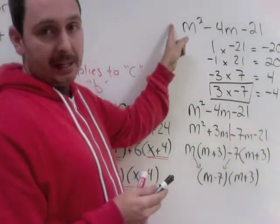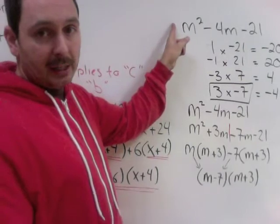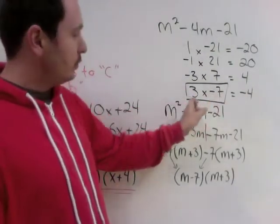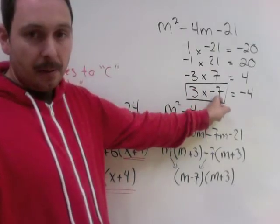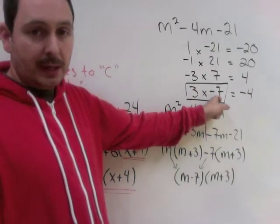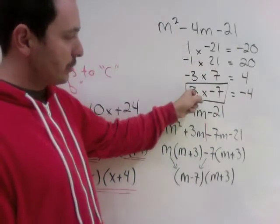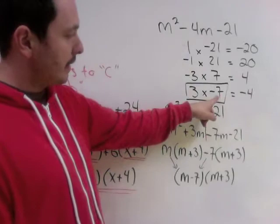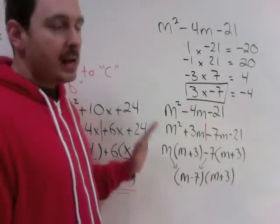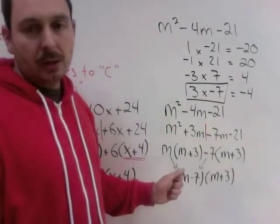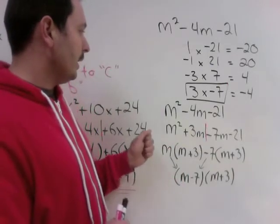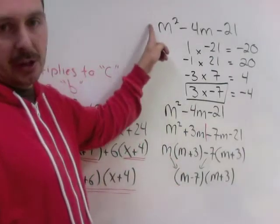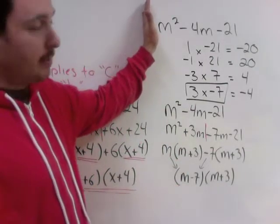Whenever there's a 1 here, you can do it really quickly. Because it's 1m squared. Your two numbers using 3 and minus 7, that's just what's going to go in the answer. It's using an m. So, you have an m plus 3. And you have an m minus 7. I really need you to learn the long method though. Because the shortcut won't work when other numbers other than 1 get here. But whenever you see a 1 here, go ahead and use this method.